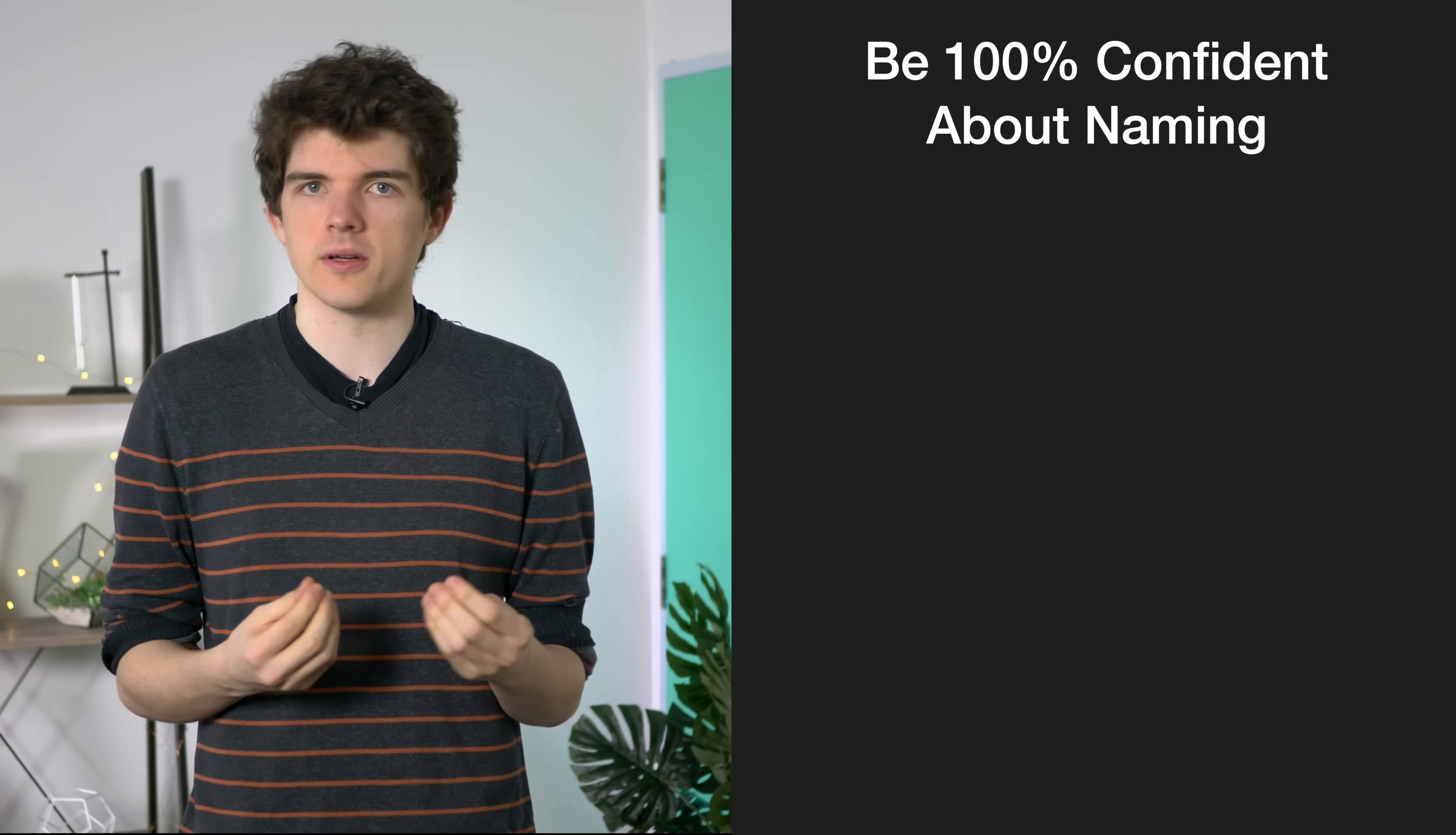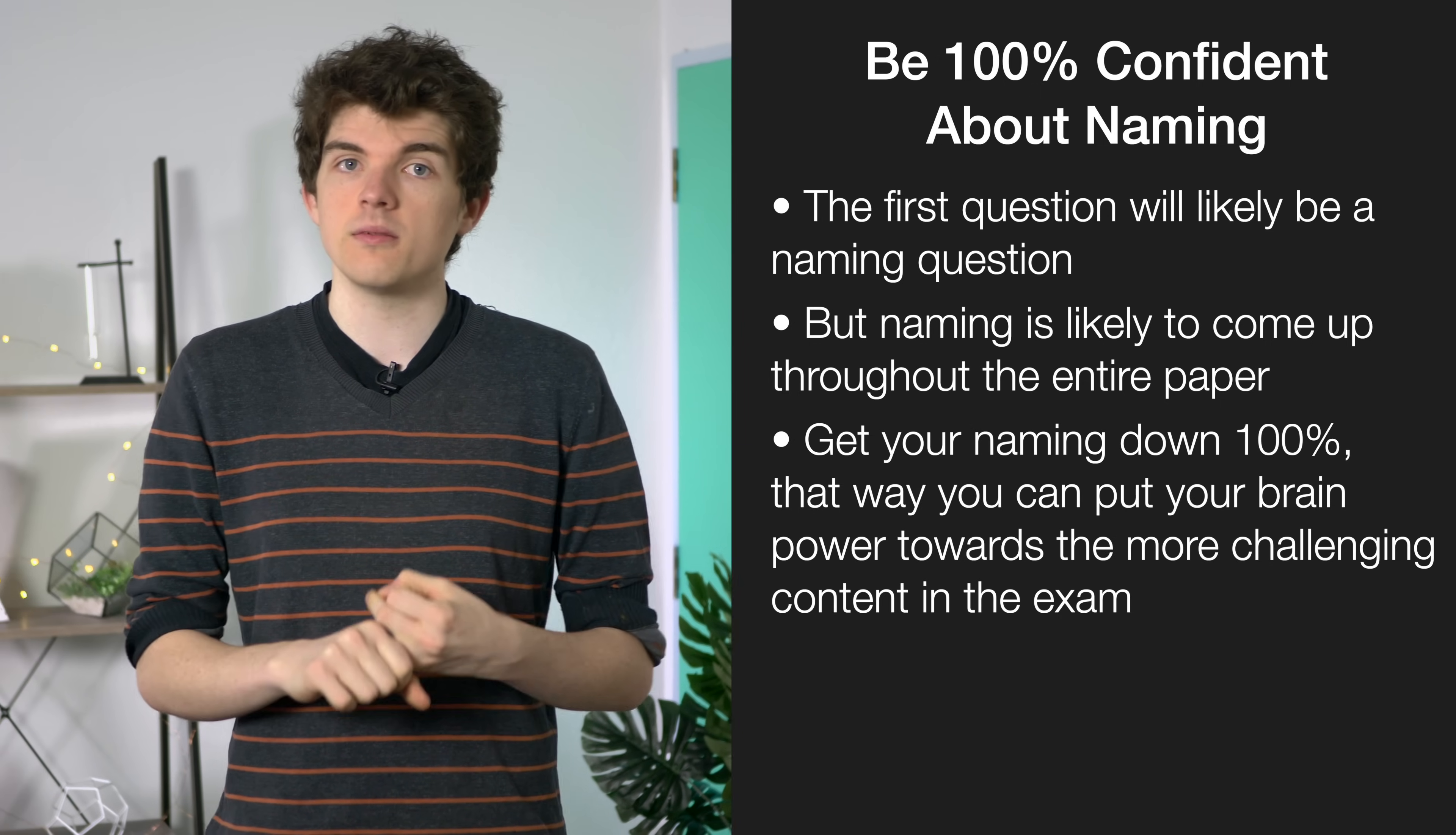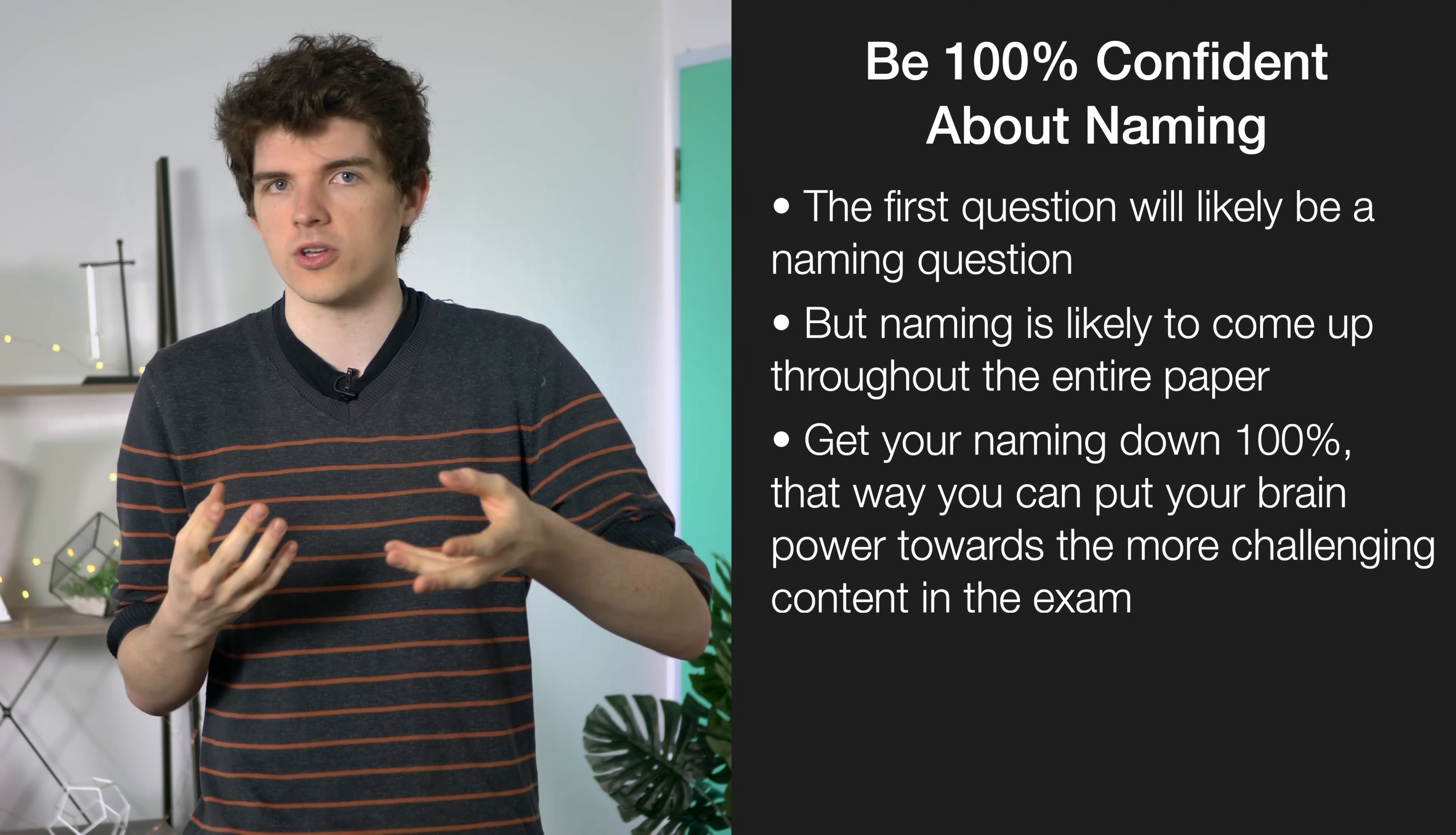So the first big thing for this paper is to get your naming down 100%. This is really the fundamental skill for organic chemistry and it's going to come up throughout the paper. The first question is always a naming and drawing type question but you will have to do it tons of times throughout the paper. Make sure you get it down 100% so you can focus your brain power on the harder stuff as opposed to wondering whether you're working with the right molecule.